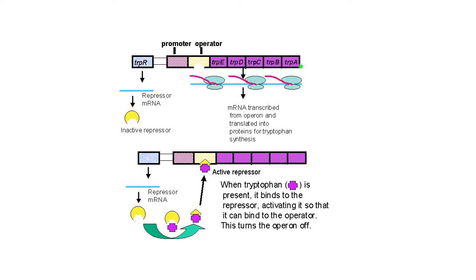In this case, the structural genes are trpE, trpD, trpC, trpB, and trpA. If these structural genes are transcribed and translated, the amino acid tryptophan is produced. Tryptophan is one of the essential amino acids, and bacteria need all the amino acids to be able to build any protein, so bacteria need tryptophan all the time.